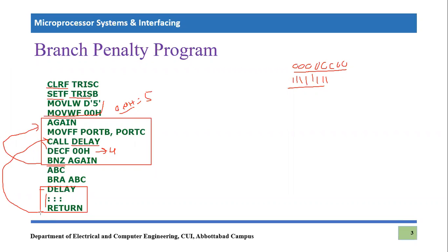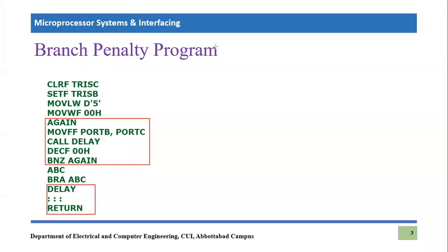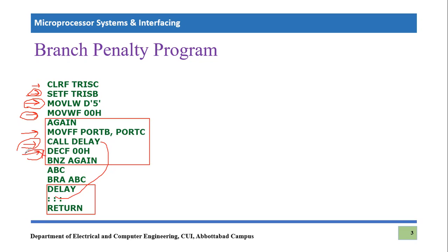Now let's look at the main thing we want to see: branch penalty in this code. If we implement the pipelining mechanism in this program, when each instruction is under execution, the next one is being fetched. When we arrive at the CALL statement and it goes under execution, the decrement file instruction would be fetched. But when the call executes, the processor comes to know we have to jump to the delay subroutine — so the fetched decrement file instruction is not needed and we flush it out. That is branch penalty: we are branching from one point to another within the program.